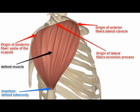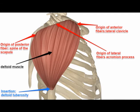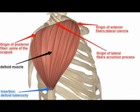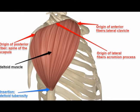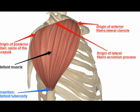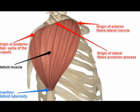The origin of the anterior head is the lateral clavicle. The origin of the lateral head is the acromion, and the origin of the posterior head is the scapular spine.